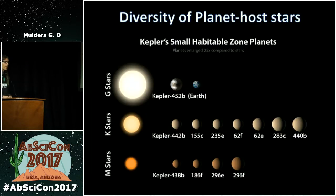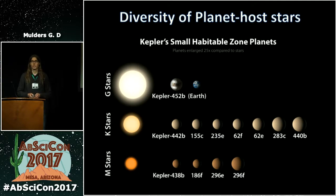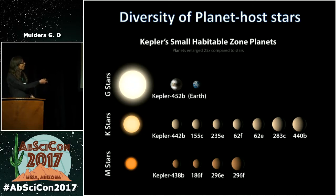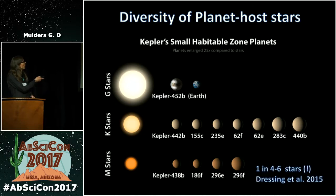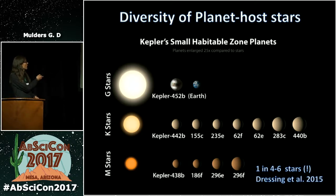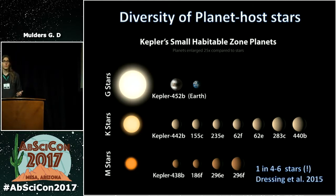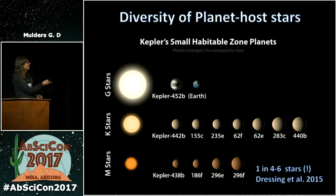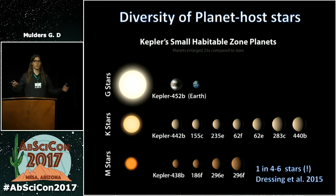Some of the planet candidates in the habitable zones of their stars don't all form around sun-like stars. We find a lot of planet candidates around different types of stars — not just sun-like stars, but also lower-mass K stars and lower-mass M stars. There is some detection bias here because it's easier to detect small planets in the habitable zone when the habitable zones are closer in and the stars are a bit smaller.